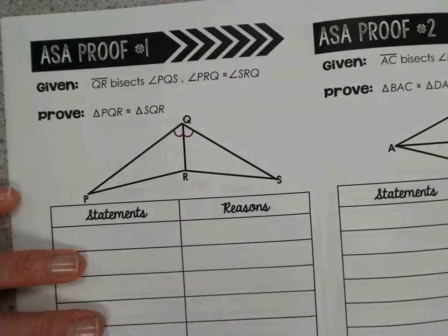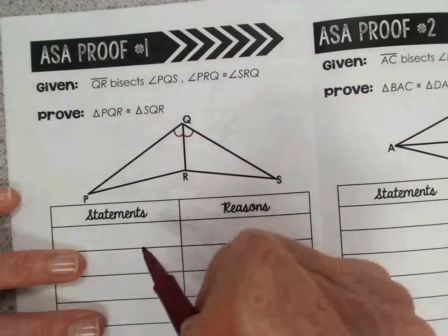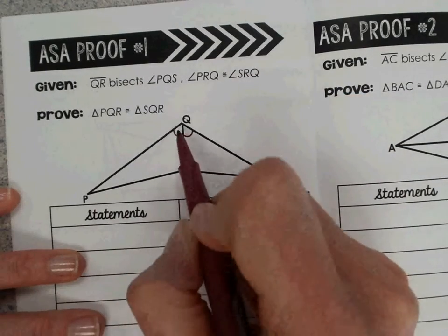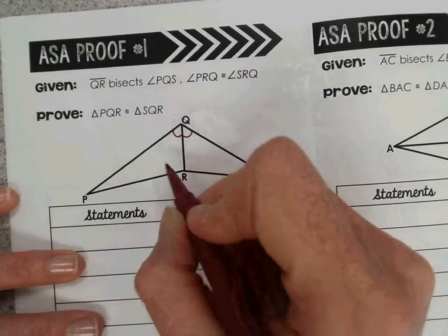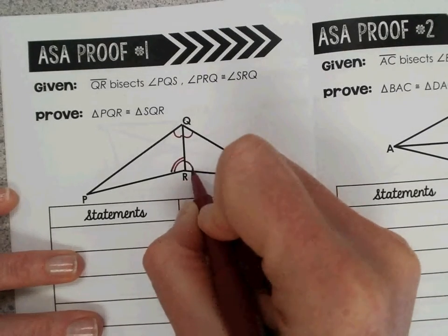And then it says angle PRQ is congruent to angle SRQ. So that means I have these two angles are congruent to one another.